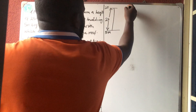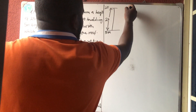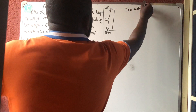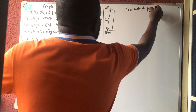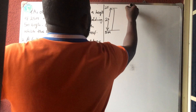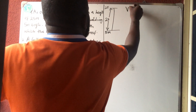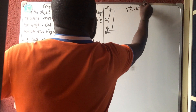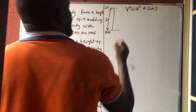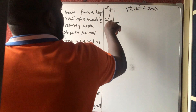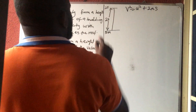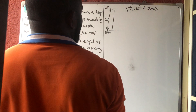For maximum height, we use the second equation of motion, which says V squared is equal to U squared plus 2AS. The final velocity there is 0.